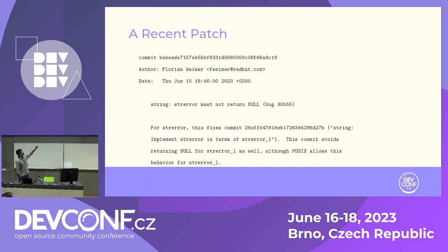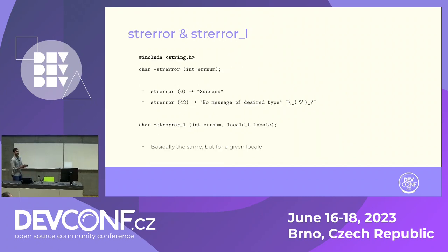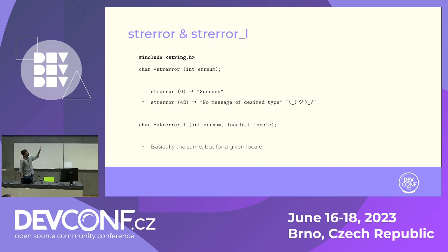Florian explains that a recent change implemented strerror in terms of another function, strerror_l, and that caused a regression. What is strerror? If you know errno, strerror takes in an error number and returns a string describing what that error means. If you put zero, you get success. I didn't know this — but strerror(42) returns 'no message of desired type.' I thought it was funny that this is the reply you get when you try to find out what 42 means.